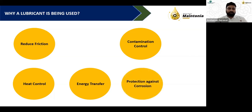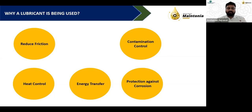Protection against corrosion is also a key function. Corrosion happens because of formation of acids and corroding chemicals in various parts. Lubricants wash away those chemicals from the point of generation.